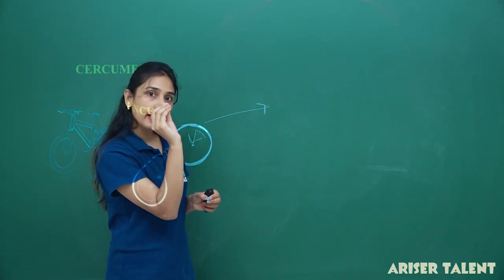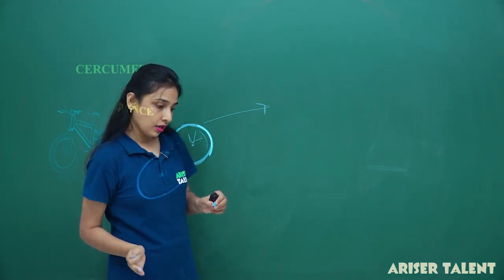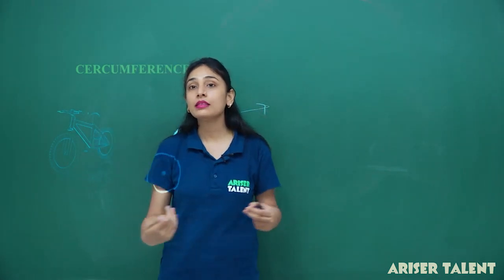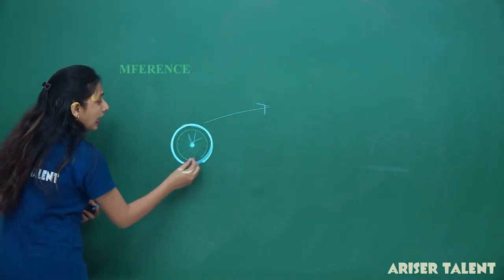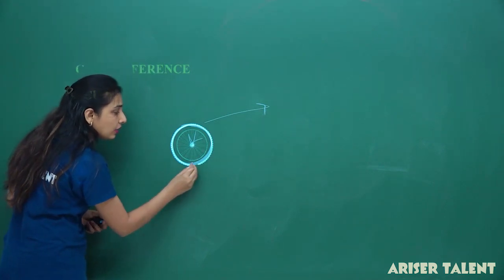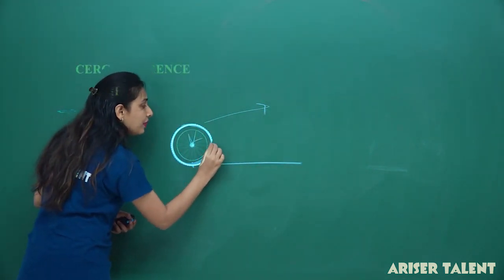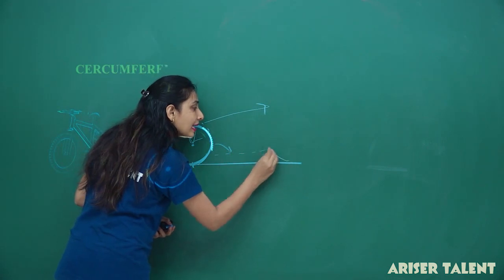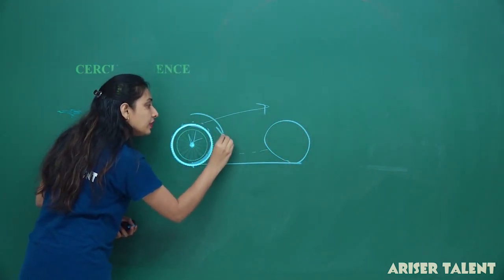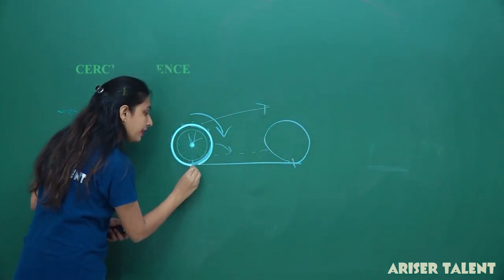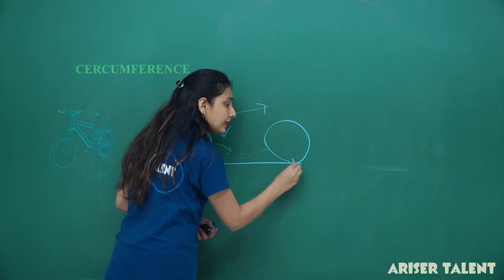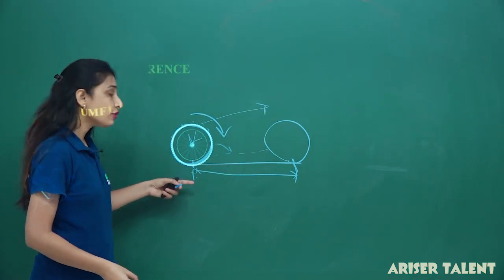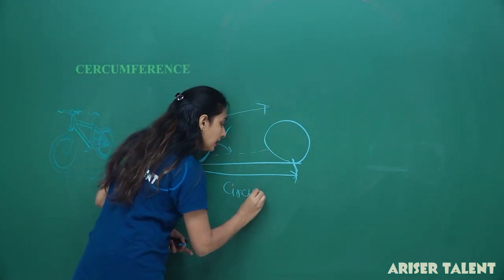If I put a mark on the tire and make my cycle move, the cycle will move and this point I marked will rotate — it will come here, here, here, and again there. At a particular time, when the rotation completes one full turn, this point P will occur again at the same position. So the distance covered by this is what? Actually, the circumference.